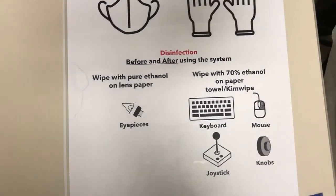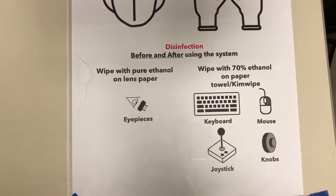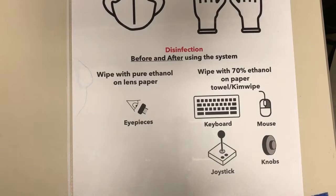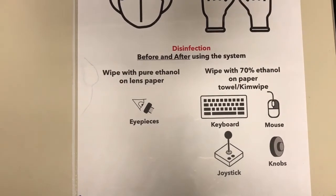The next step is to disinfect the system. We'll need to do this before and after we use it. Before, we will need to wipe with pure ethanol on lens paper the eyepieces, and then wipe with 70% ethanol on a paper towel or kimwipe the keyboard, mouse, joystick, and knobs.